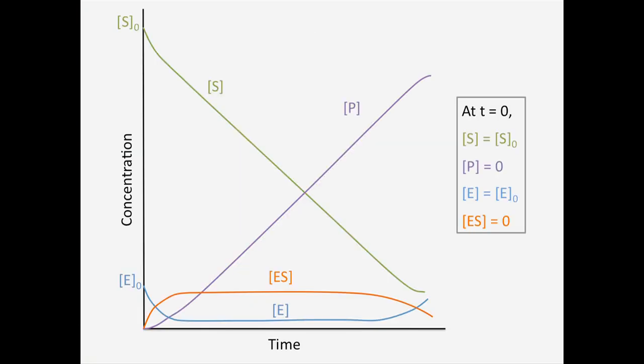We've integrated these equations numerically using the boundary conditions that at time equals zero, the substrate concentration is S-naught, the product concentration is zero, the enzyme concentration is E-naught, and the concentration of enzyme bound to substrate is zero. We see that after a short start-up period, the concentration of enzyme bound to substrate remains approximately constant. In this region, where the substrate concentration is much greater than E-naught, as enzyme is released from the enzyme-substrate complex, it quickly recombines with available substrate. As more substrate is converted to product and the substrate concentration approaches E-naught, the concentration of enzyme bound to substrate is no longer constant.